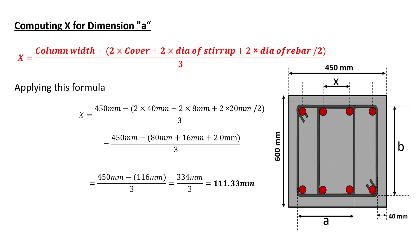The formula to calculate x is given by x equal to width of column minus twice clear cover plus twice diameter of stirrup plus twice diameter of main bar upon 2 whole divided by 3.